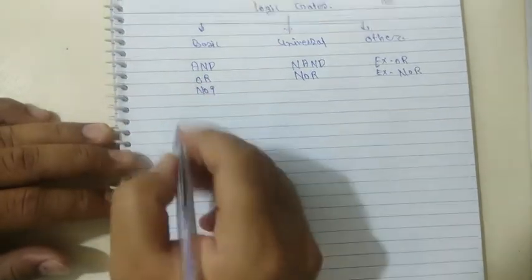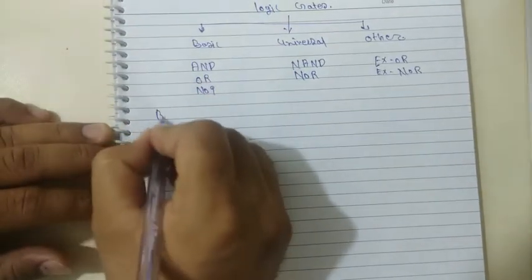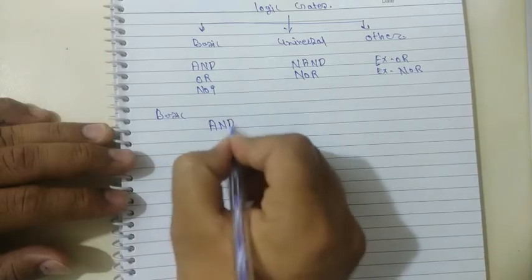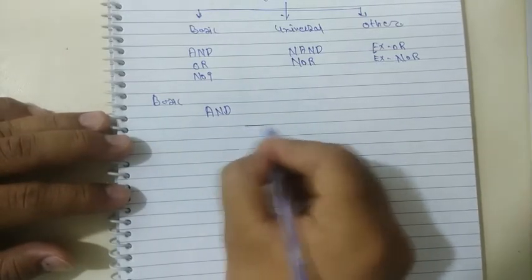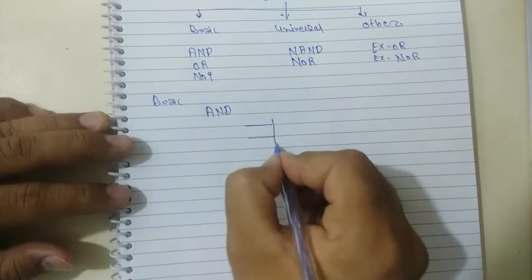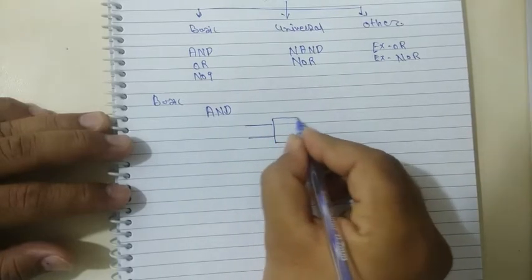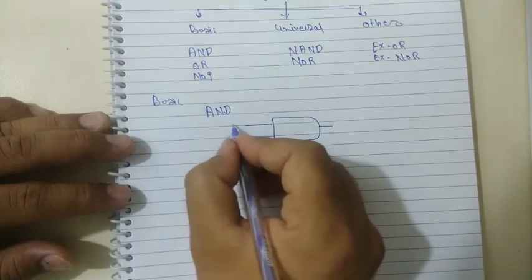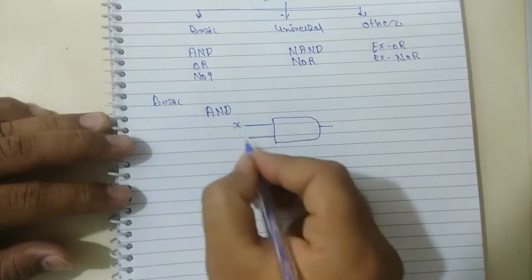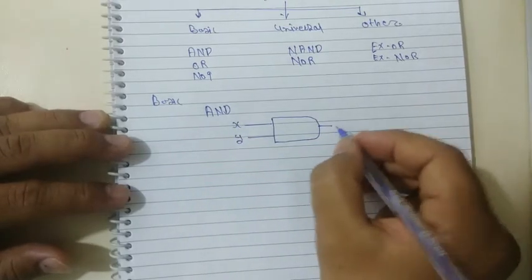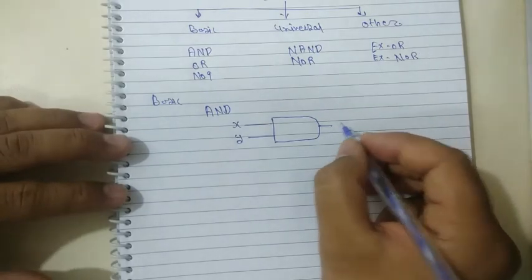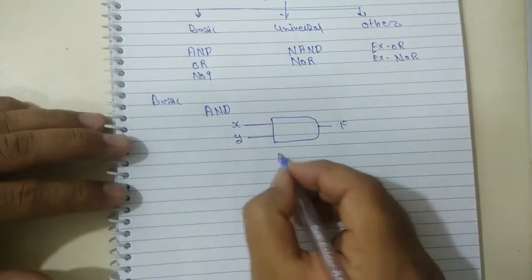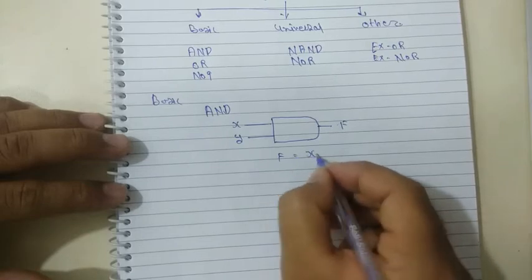So let's start with the basic logic gates, beginning with the AND gate. The symbol for the AND gate has two inputs — let's consider X and Y — and one output F. The output function is F equals X dot Y.